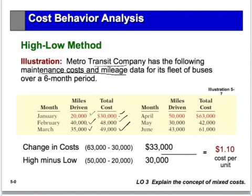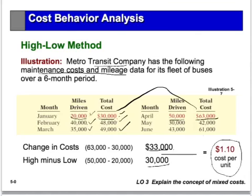To find the variable portion, take the low activity of 20,000 miles and the high activity of 50,000 miles, along with their respective costs. The cost went up $33,000 — that's the change in cost. The mileage went from 20,000 to 50,000, a change of 30,000 miles. Dividing $33,000 by 30,000 miles gives us $1.10 per mile — that's the variable portion of the cost.